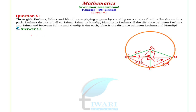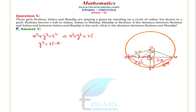In triangle OKR, applying the Pythagorean theorem: perpendicular² + base² = hypotenuse², so X² + Y² = 5² = 25, meaning Y² = 25 − X². We call this Equation 1.